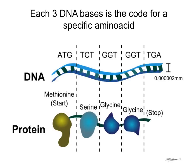So each triplet, or each group of three DNA nucleotides, is coding for a particular amino acid. So we have these triplets, and they each give the instruction for a particular amino acid, so that the sequence of the DNA is determining the sequence of the amino acids in a protein.